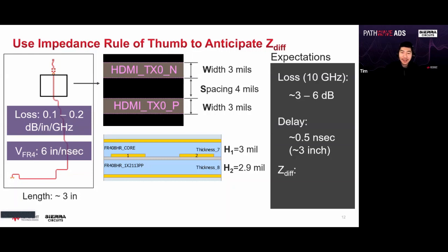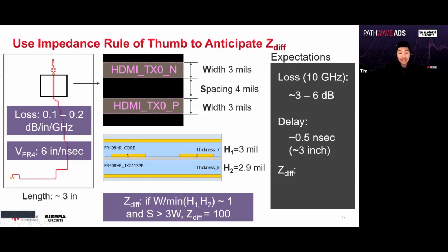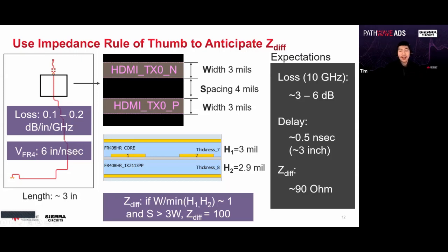Let's look at my expectation. The rule of thumb I go by: if the width over the minimum height (h1/h2) is about 1 for a stripline, and the spacing is greater than 3W, then the differential impedance is 100 ohms. Since spacing must be greater than 3W, that's 9 mils for 100 ohms, but my spacing is only 4 mils. That means the differential impedance is going to be less than 100 ohms — my guess is about 90 ohms.